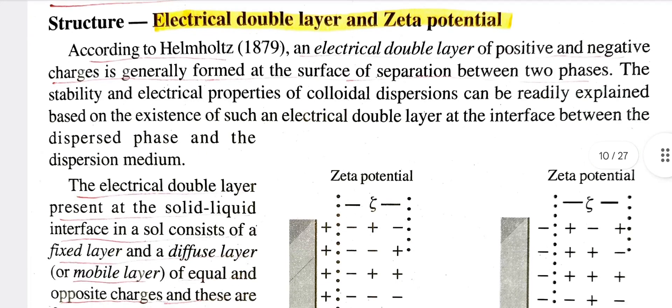Now we are going to get a description of the electrical double layer. According to the Helmholtz model, an electrical double layer of positive and negative charges is generally formed at the surface of separation between two phases.